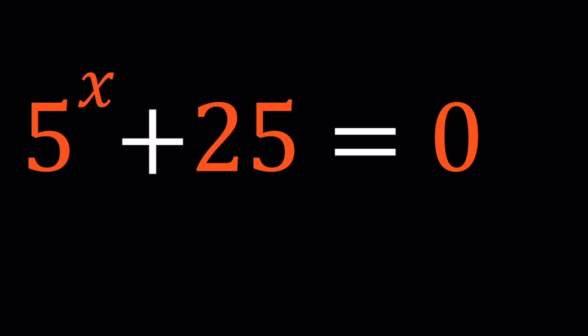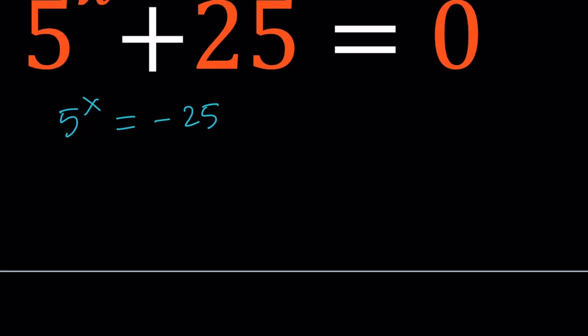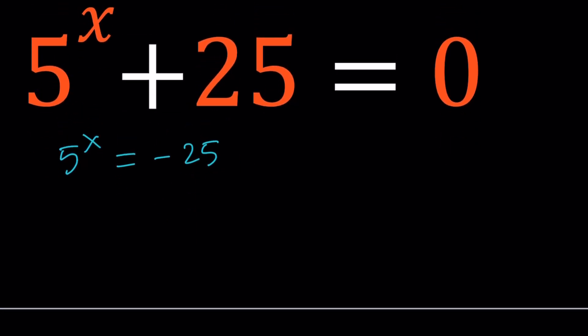So first of all I'd like to subtract 25 from both sides and write this as 5 to the power x equals negative 25. Knowing that 25 is 5 squared, do you think x equals 2 is going to work? It unfortunately isn't, because 5 squared is equal to 25, not negative 25. So x equals 2 does not work.